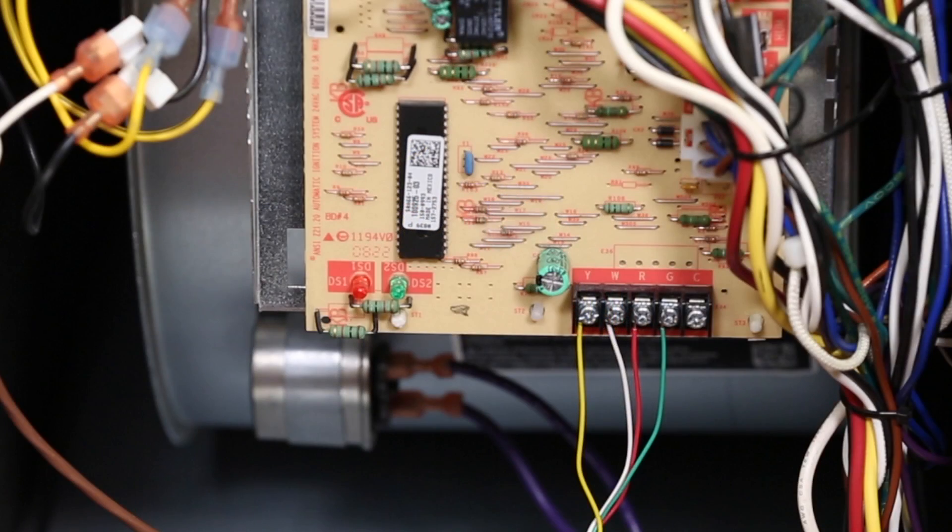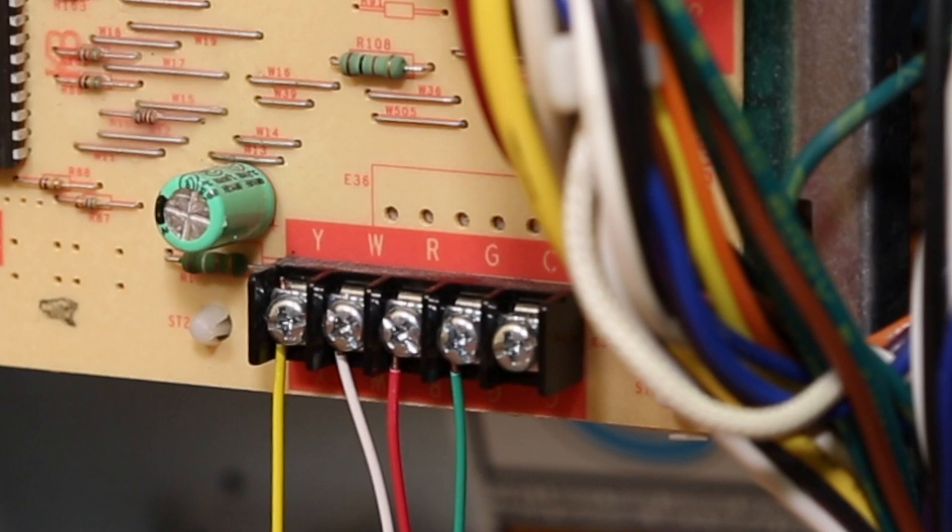Once inside, look for the furnace control board. On this board, you will see terminals with the same wires from your thermostat base plate. These terminals will include labels such as Y, W, R, G, and C.